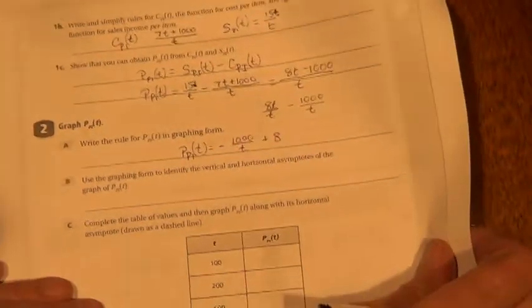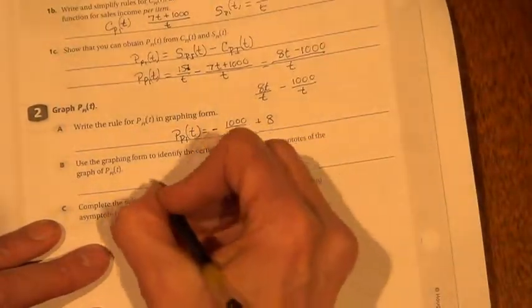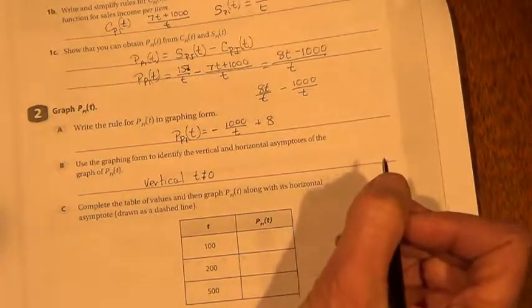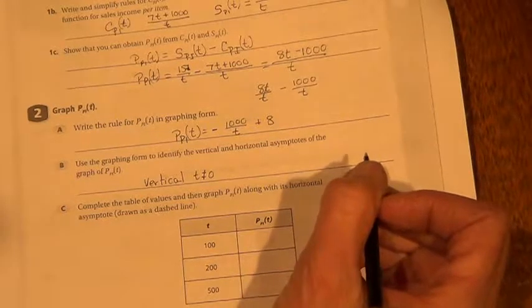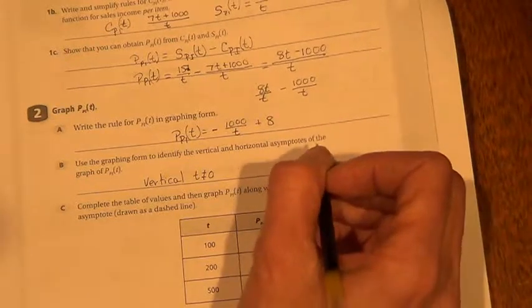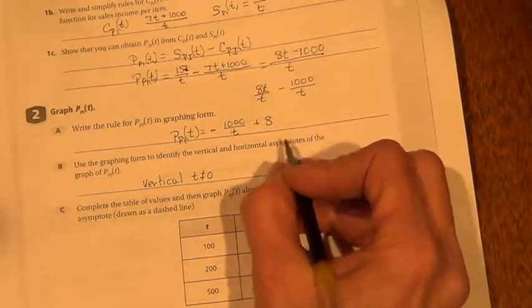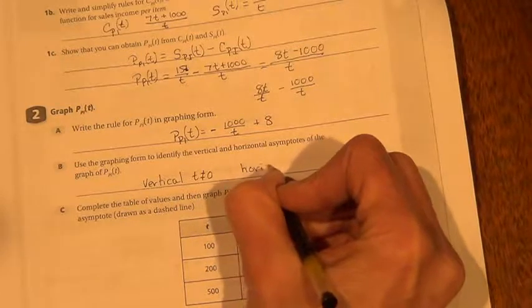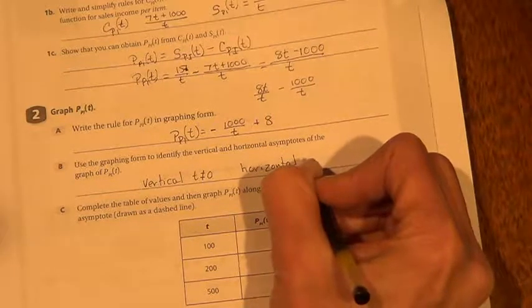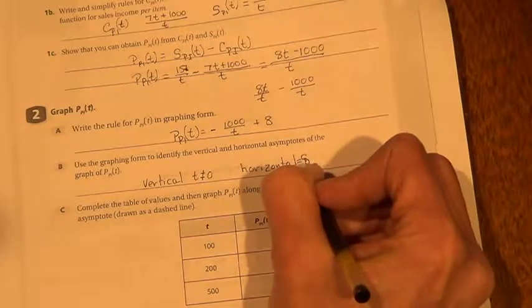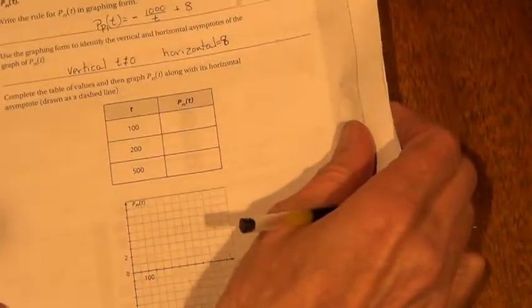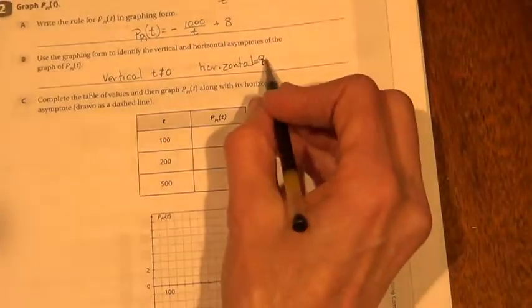Use the graphing form to identify the vertical and horizontal asymptotes of the graph. So our vertical is just that t cannot equal zero. In other words, think about that in the context of the situation. We're saying that you can't have zero t-shirts that you sell, because you wouldn't have any profit per shirt if you don't sell any. The horizontal, again you look at your k value, this is your y. The horizontal is 8, right up there.